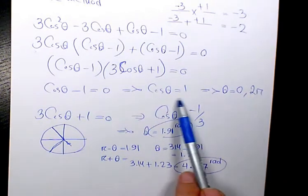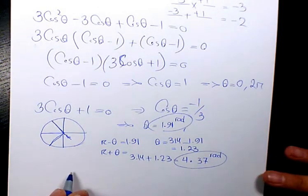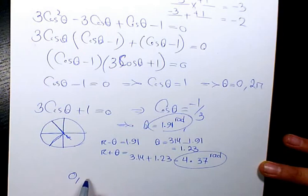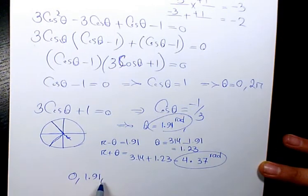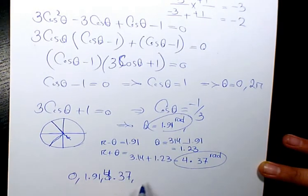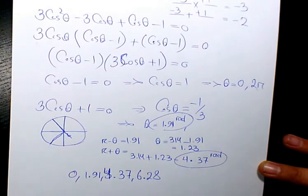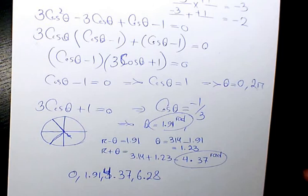So two answers in here, and two answers when cosine theta equals 1. So in total, these four answers, I can write 0, 1.91, 4.37, and also 2π, which is going to be 6.28. So we have these four answers for this trig equation. I hope you enjoyed this video.